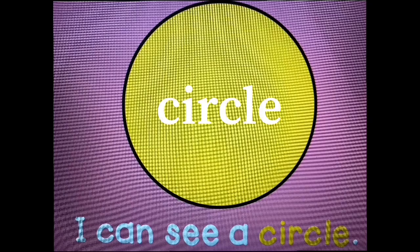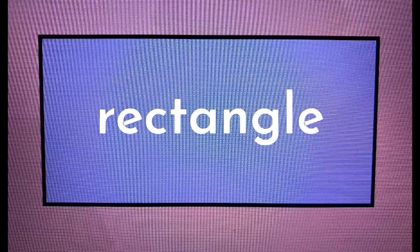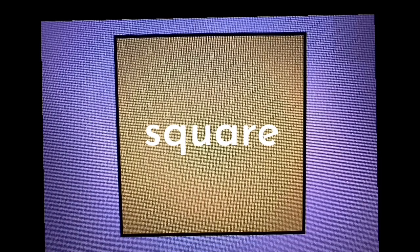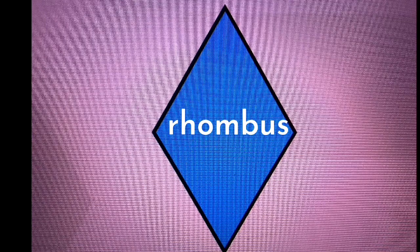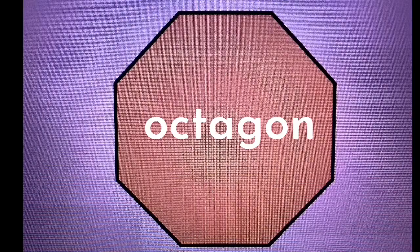I can see a circle. I can see a triangle. I can see a rectangle. I can see a square. I can see a rhombus. I can see a trapezoid. I can see a pentagon. I can see a hexagon and an octagon.